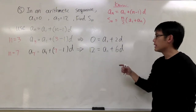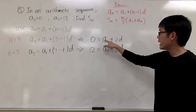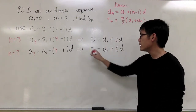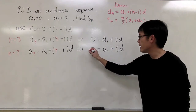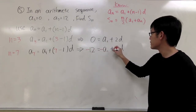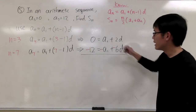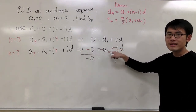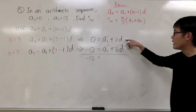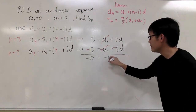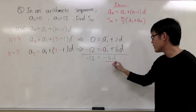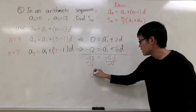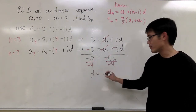We see that a1 appears in both equations with no coefficient, so I will use elimination. I'll multiply negative 1 on the second equation, putting a negative in front of all the terms. Then combining the two equations: 0 minus 12 gives negative 12, a1 and negative a1 cancel out, and 2d minus 6d gives negative 4d.